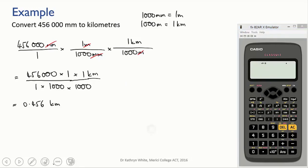What we want it to do is to divide 456,000 by brackets 1,000 times 1,000. So that's what we need to put in. We use brackets to encapsulate the bottom of the fraction. Always make sure you do this.